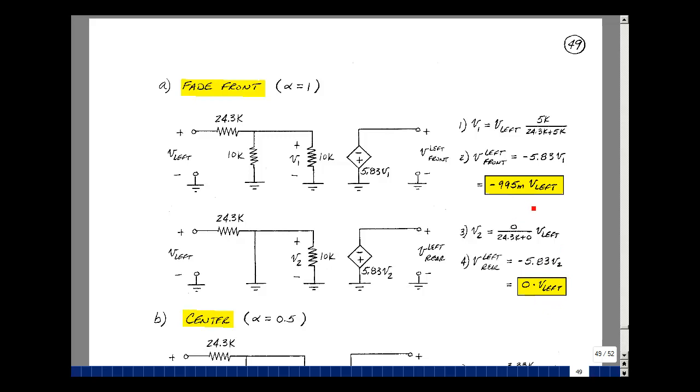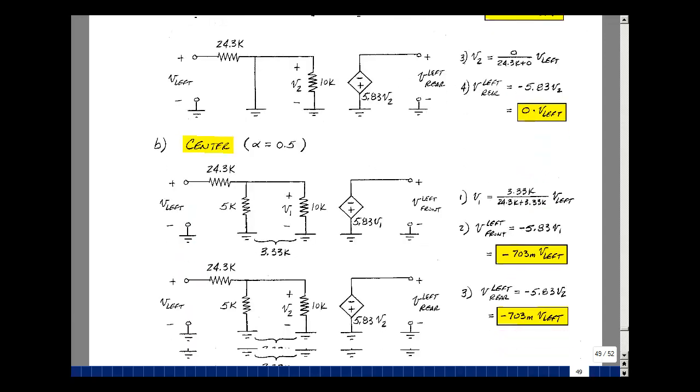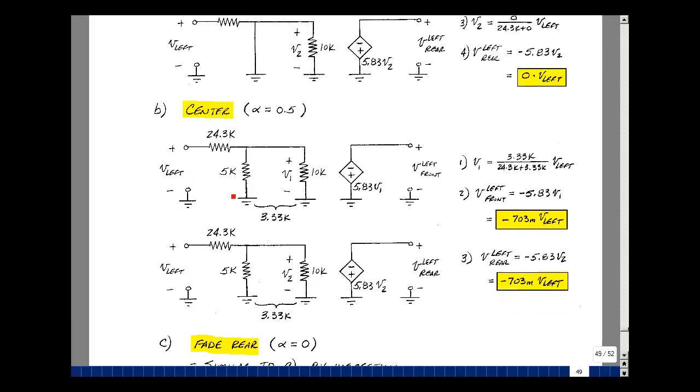Now let's put the pot in the center position. That would be alpha equal to a half. The 10k pot is multiplied by alpha, so it becomes 5k, and then 1 minus alpha is also half times 10k, which is 5k. Now I've got a voltage divider again, but now with 5k in parallel with 10k, product over the sum turns out to be 3.33k. 3.33k divided by 24.3k plus 3.33k times what's coming out of the left stereo channel is the voltage V1. Then what goes to the left front speaker is minus 5.83 times that. When you multiply this out, you get minus 0.703 times the left stereo channel.